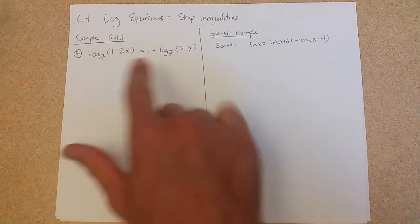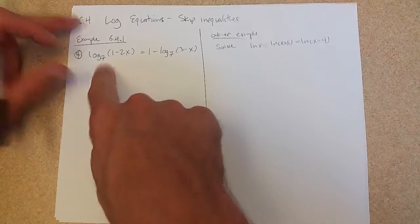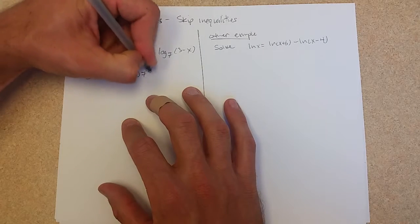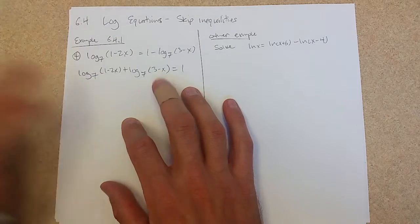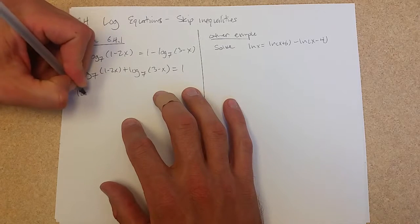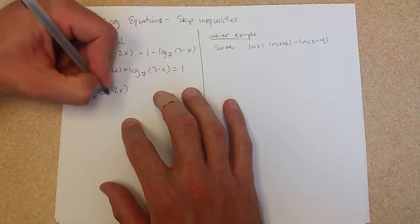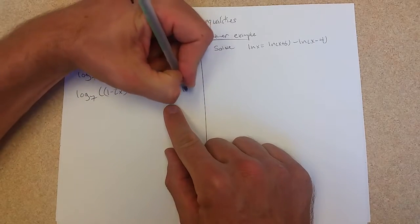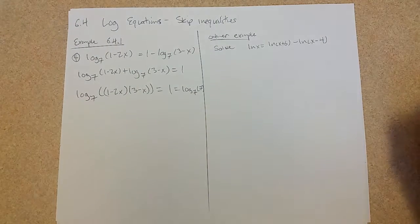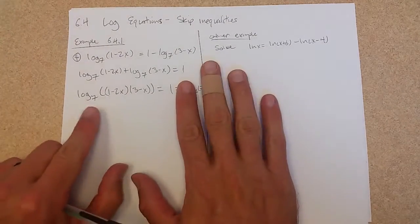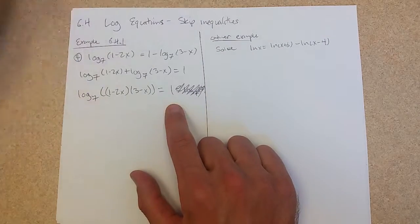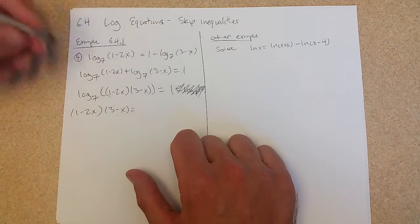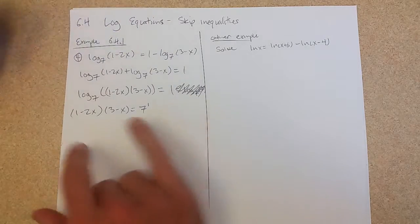There's a few ways to deal with this. I'm going to add this log to the other side. I'm adding logs, so I can multiply inside. Now there's two ways to deal with this. One could be written as log base 7 of 7, or I could just leave it as 1. I'm going to move the base to the other side. We have 7, base 7 to the first power, which of course is just 7.